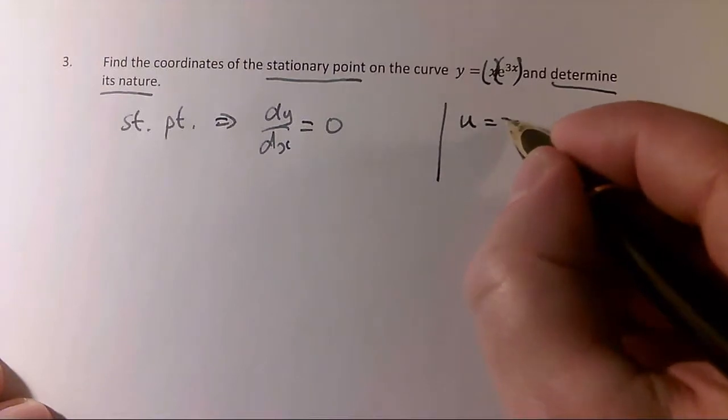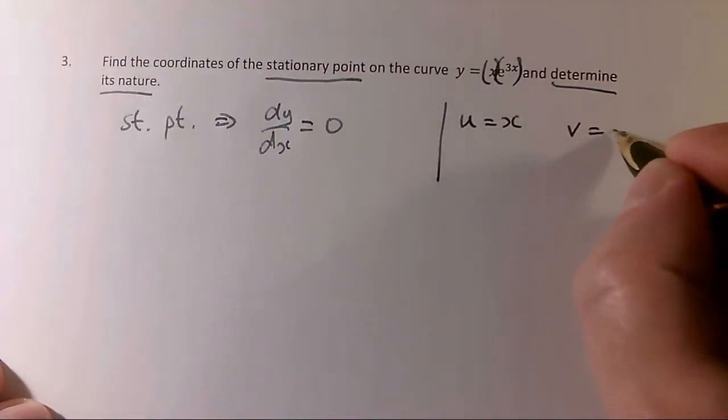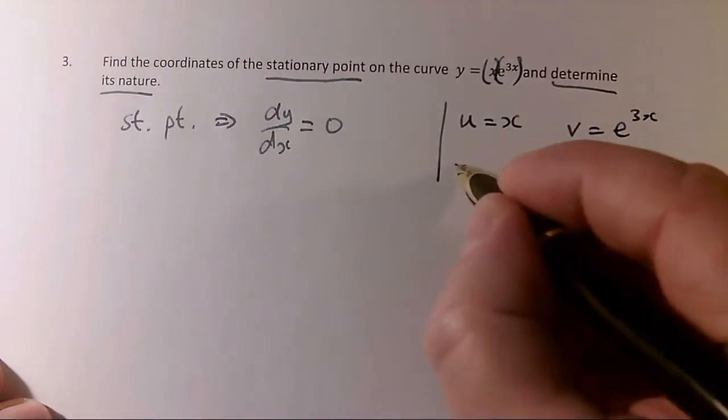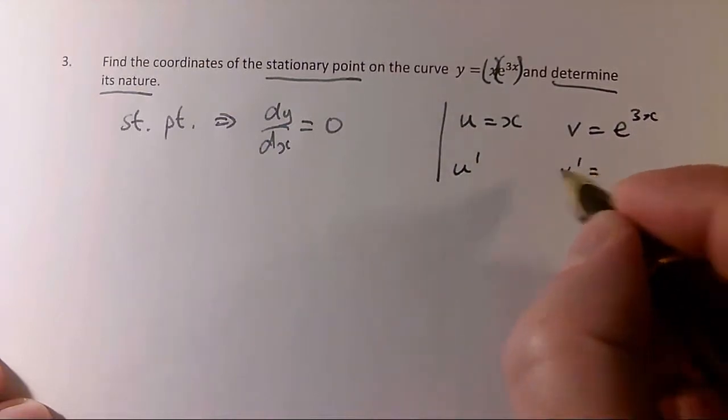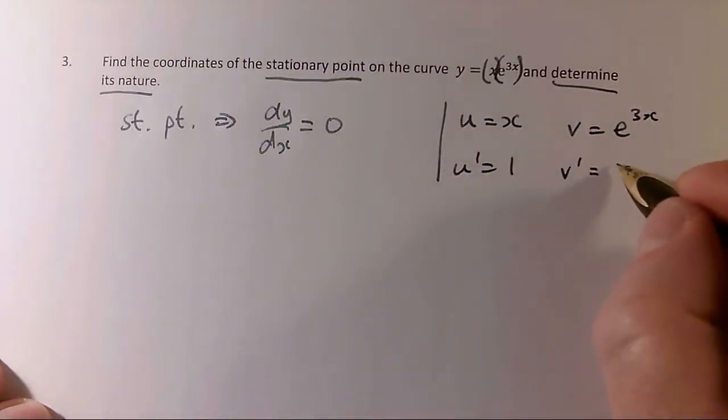So u equals x, v equals e to the 3x. So I need a u dashed and a v dashed. Differentiate x, we get 1. Differentiate e to the 3x, we get 3e to the 3x.